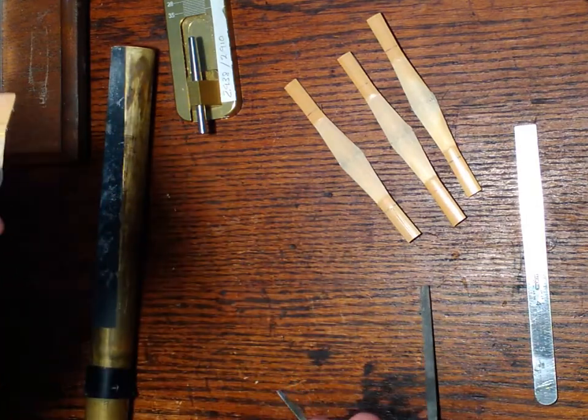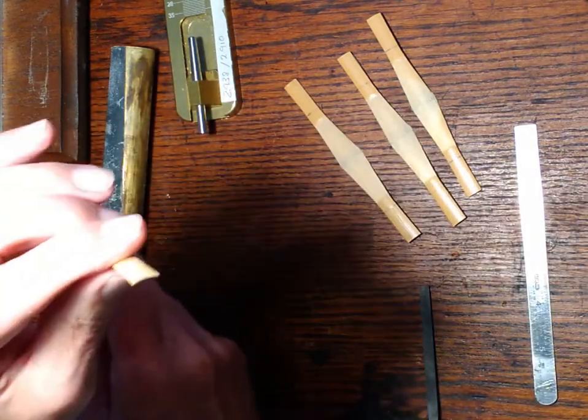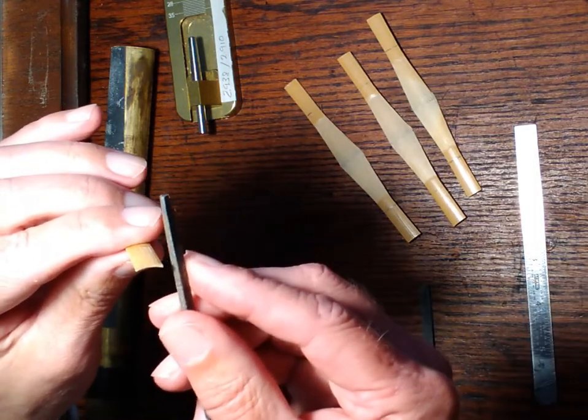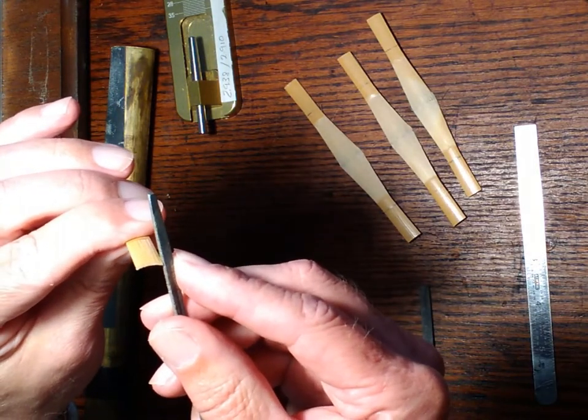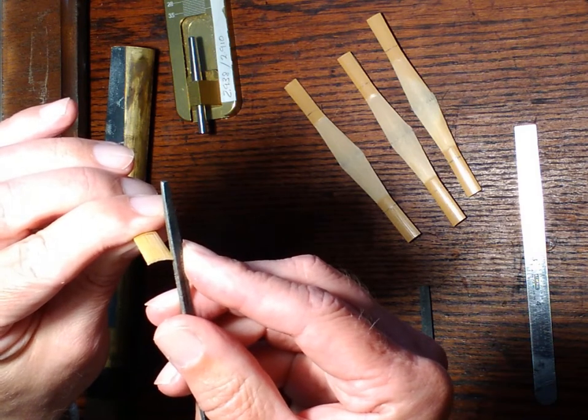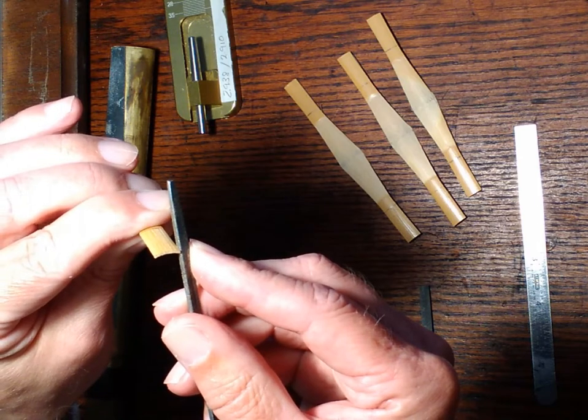I need to bevel the piece of cane. The reason why is because if you look at the end, it's been cut on the shaper so that the edges just go straight down.